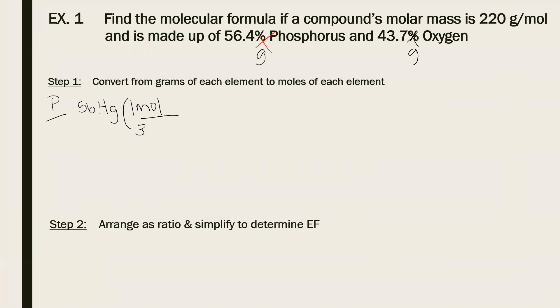I get 1.82 moles of phosphorus. For oxygen, two decimal places for all of your rounding is best. Okay, step one.